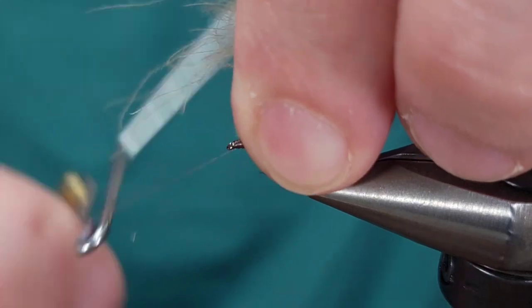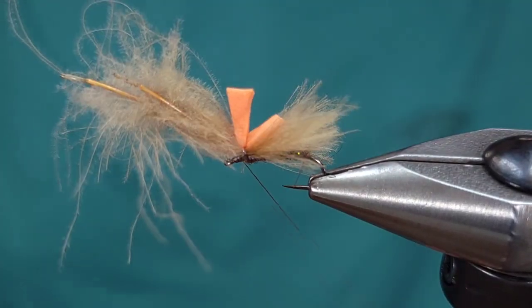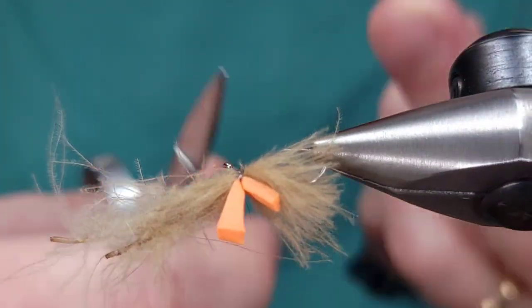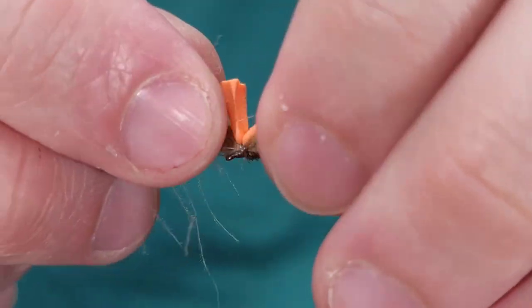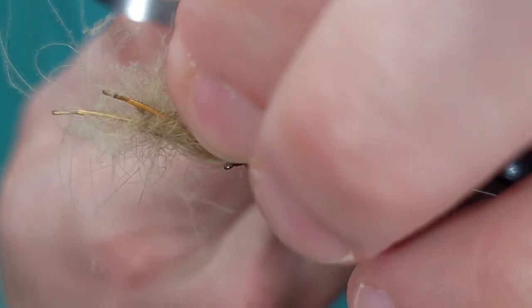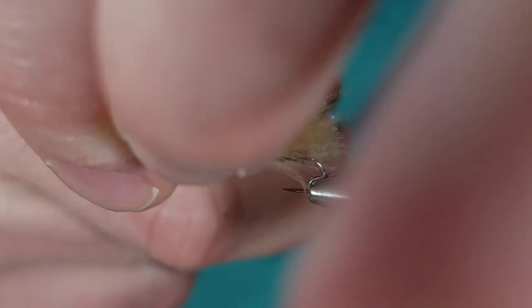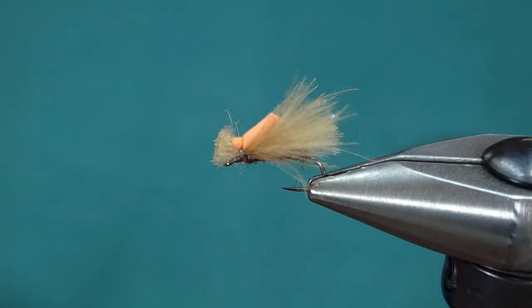Sometimes depending on where I'm fishing, if I'm fishing spring creeks or something like that where only one fly is needed, I'll fish this by itself. It's nice with this added hot spot for that purpose because you can see that little orange hot spot from quite a distance.